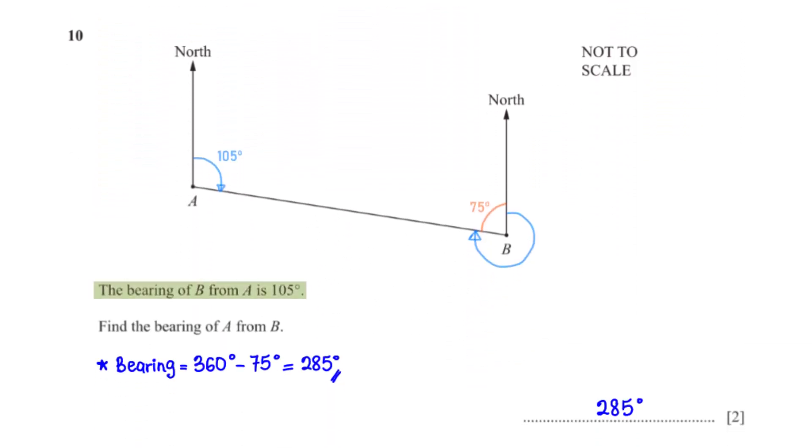The bearing of B from A is 105 degrees. Find the bearing of A from B. On the diagram, we've indicated the bearing of B from A, which has been given as 105 degrees. We've also indicated the bearing of A from B, which is what we are finding.